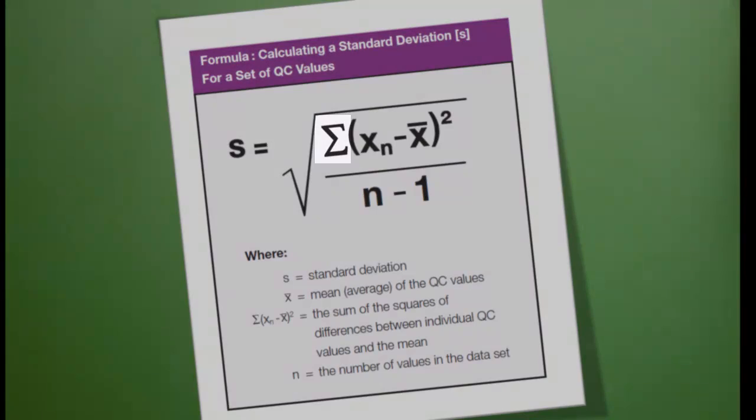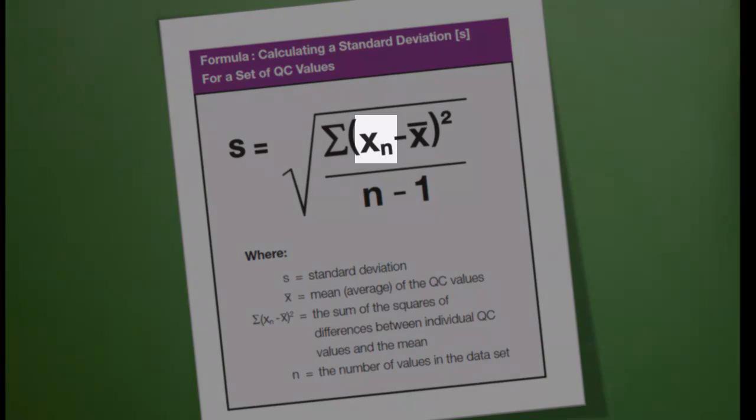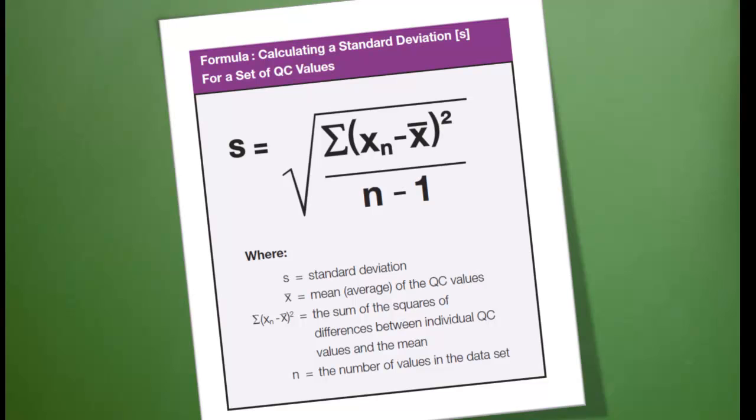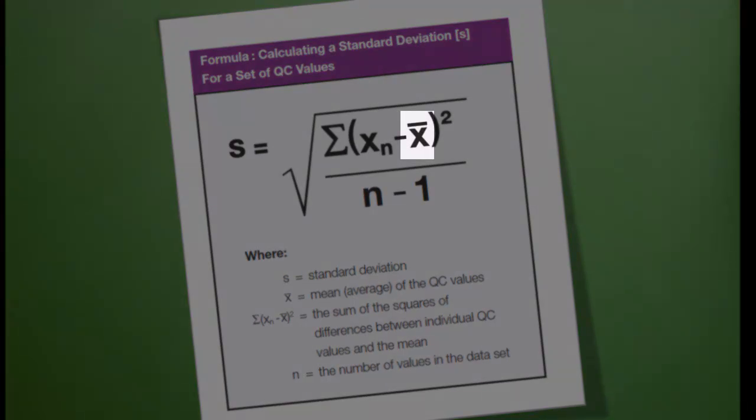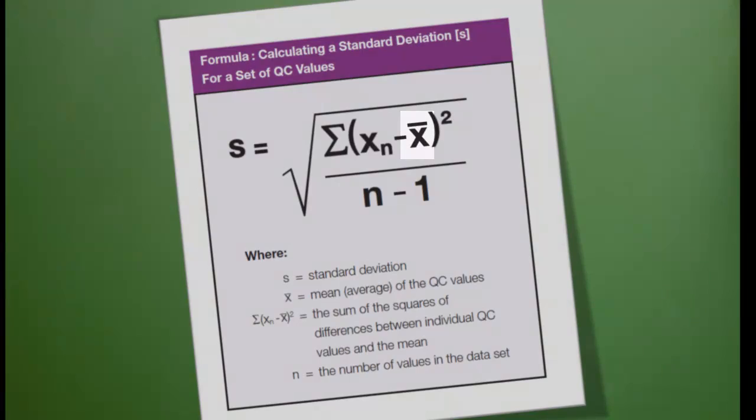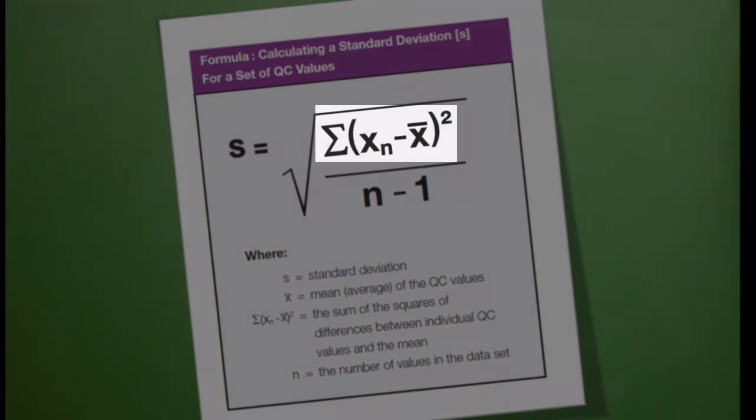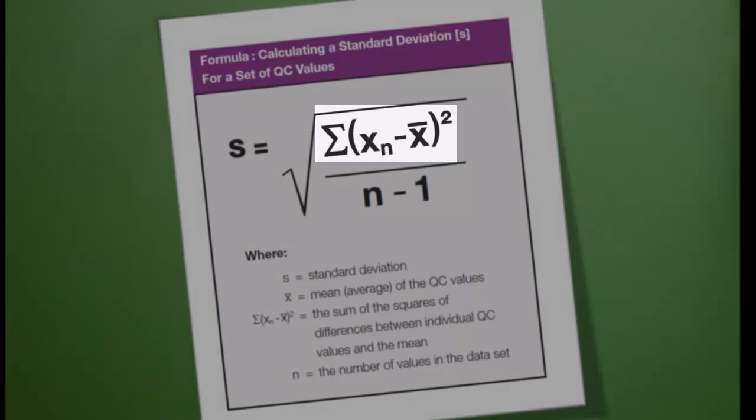Sigma indicates a sum. x sub n represents each value in the data set. Bar x represents the mean or average of the QC values. So this portion of the formula is the sum of the squares of the differences between individual QC values and the mean.